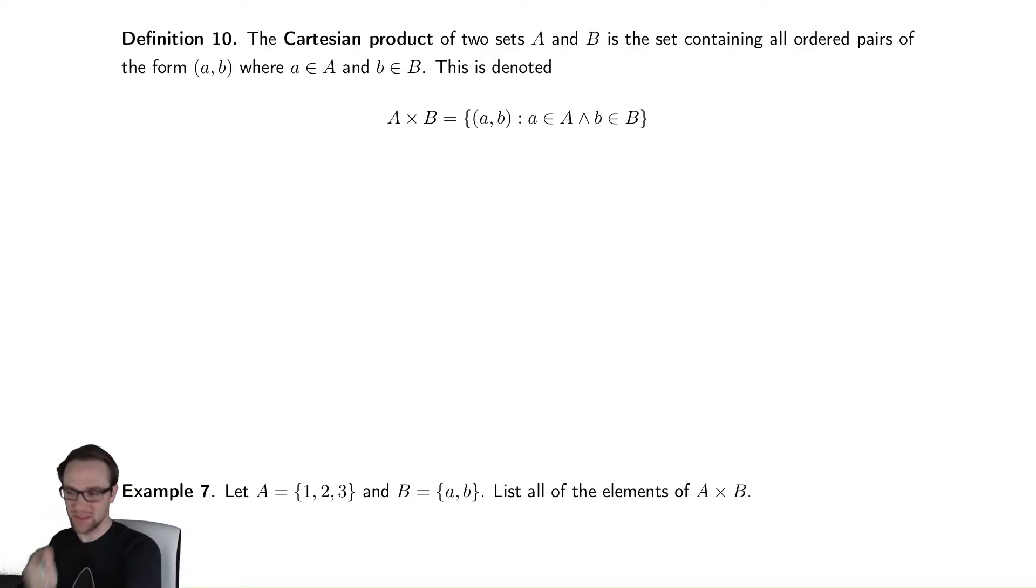And like I said, it's going to show up in this class in terms of graphs, but it also shows up in example for defining what the XY plane is. So this shows up enough that we're going to do it. And this is the set of all ordered pairs where the first thing comes from A, and the second thing comes from B.